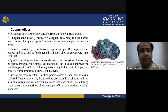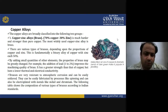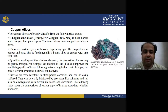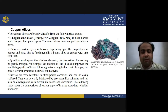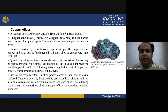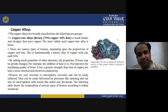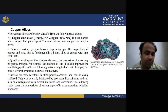By adding small quantities of other elements, the properties of brass may be greatly changed. For example, the addition of lead at one to two percent improves the machinability of brass, but results in lower thermal and electrical conductivity. Brasses are very resistant to atmospheric corrosion and can be easily soldered. Depending on the application, you choose what elements to mix into brass.